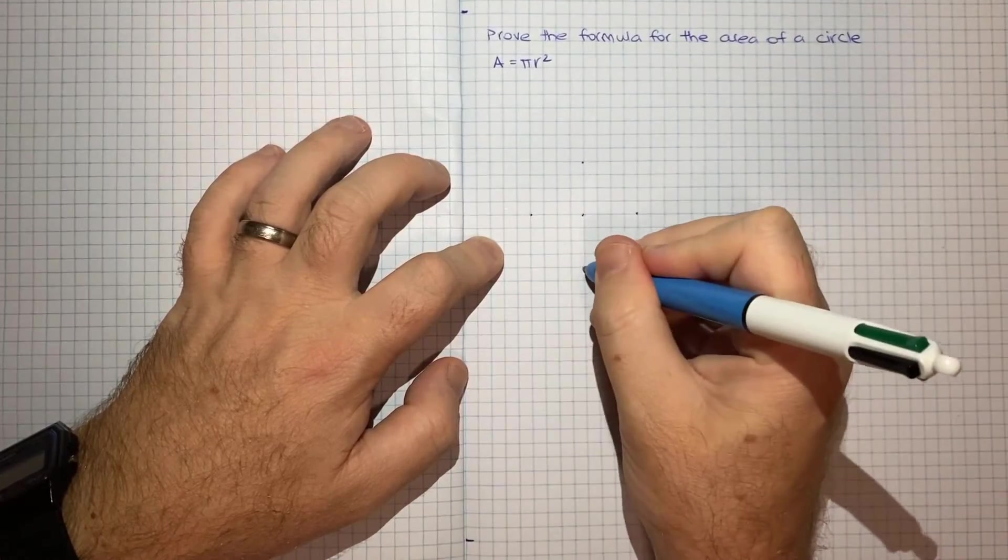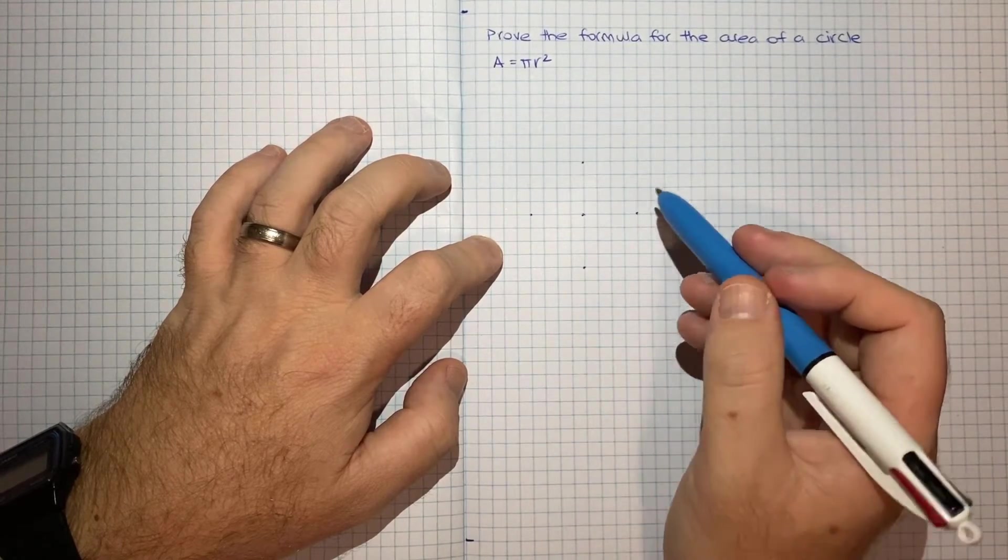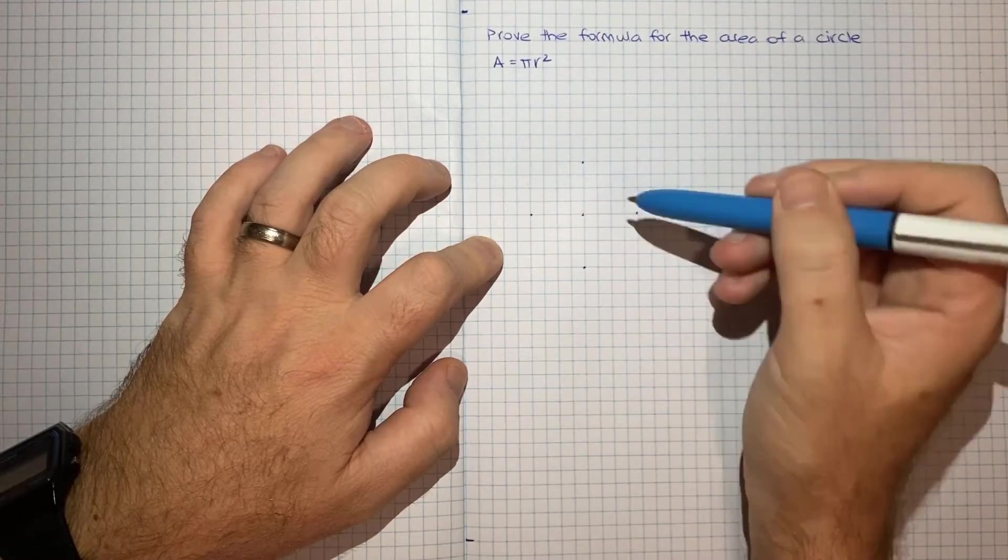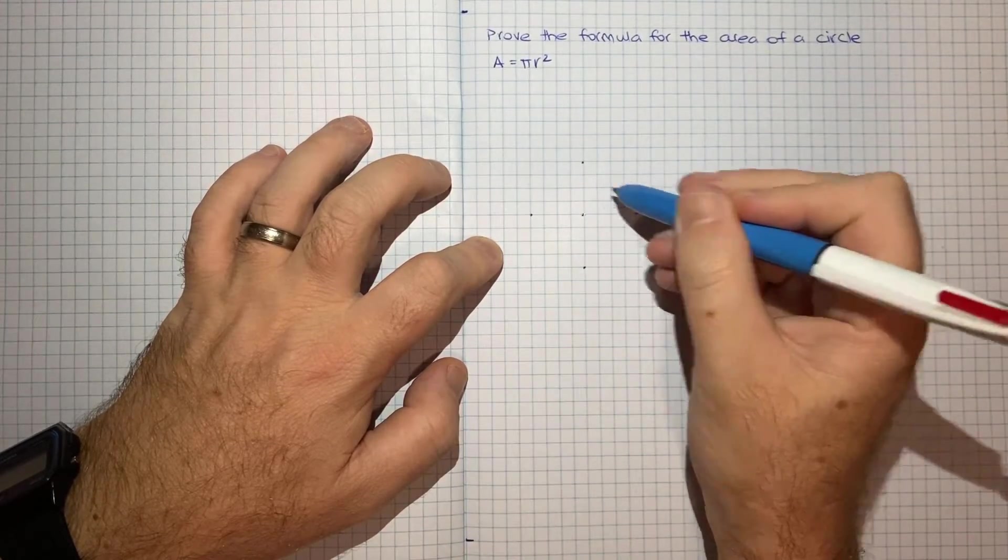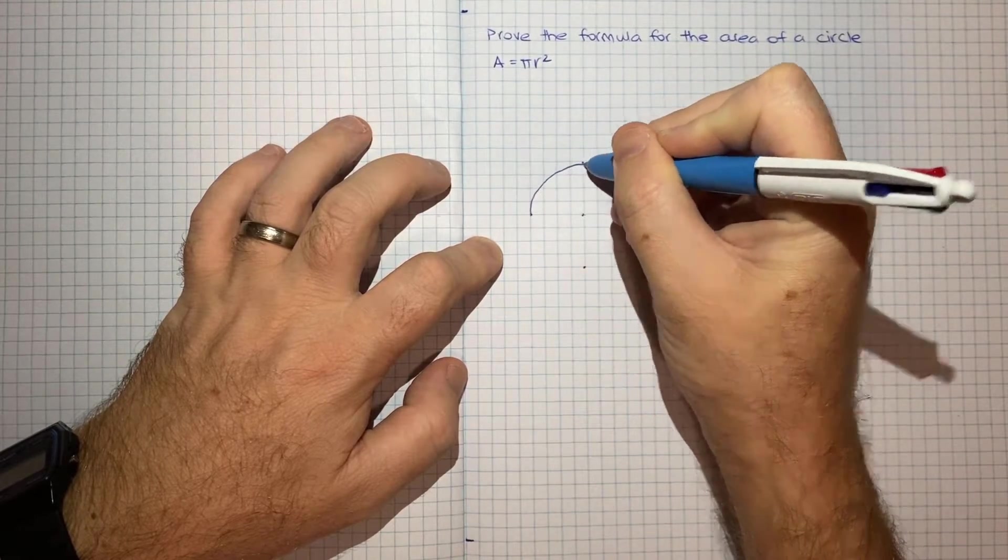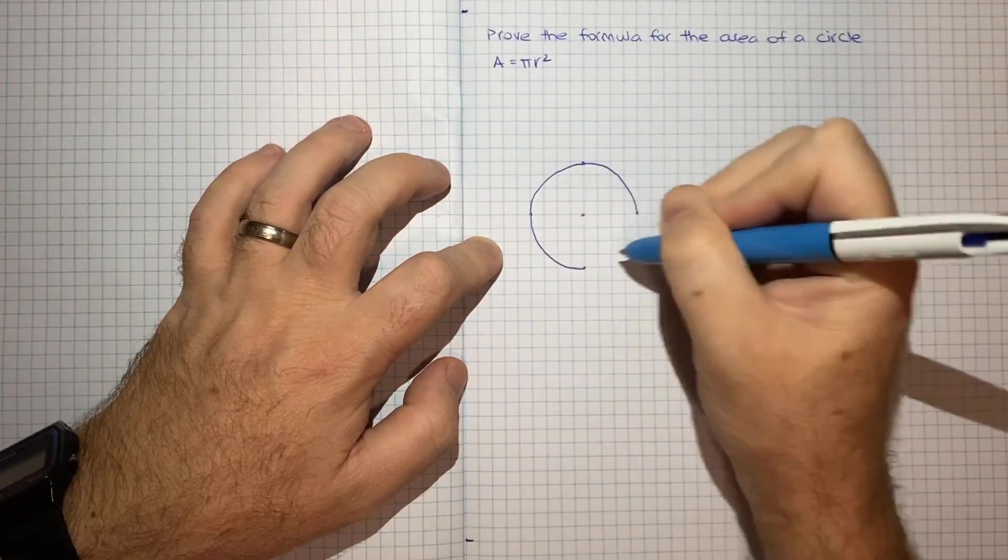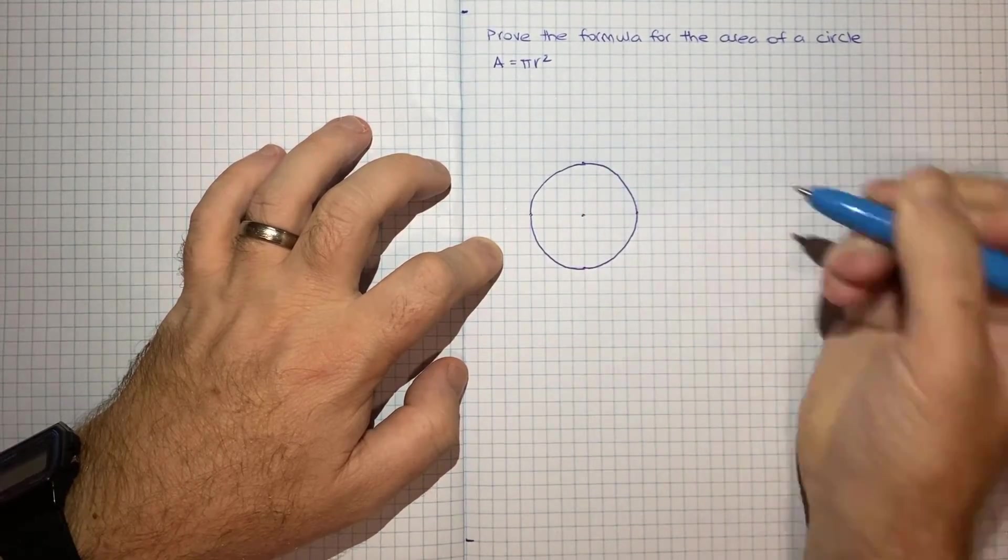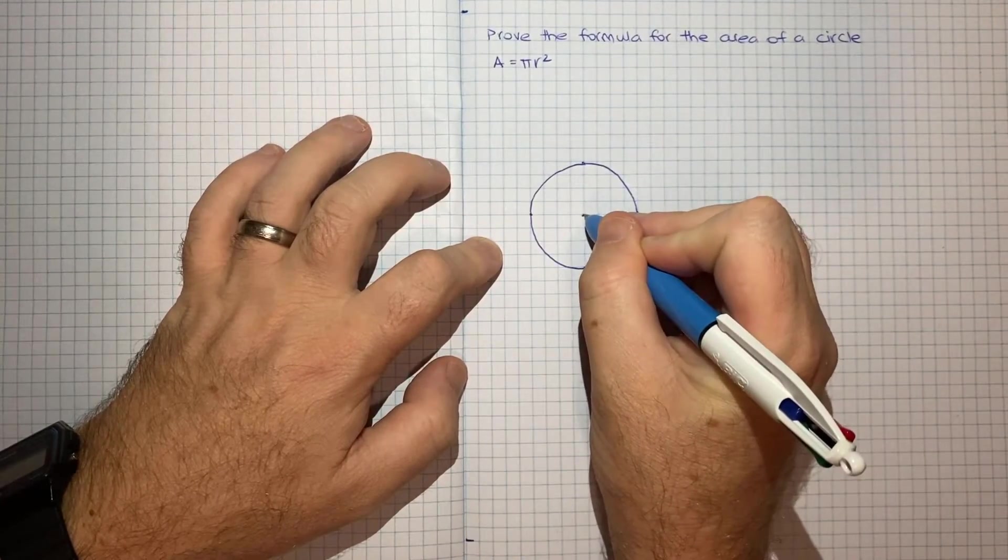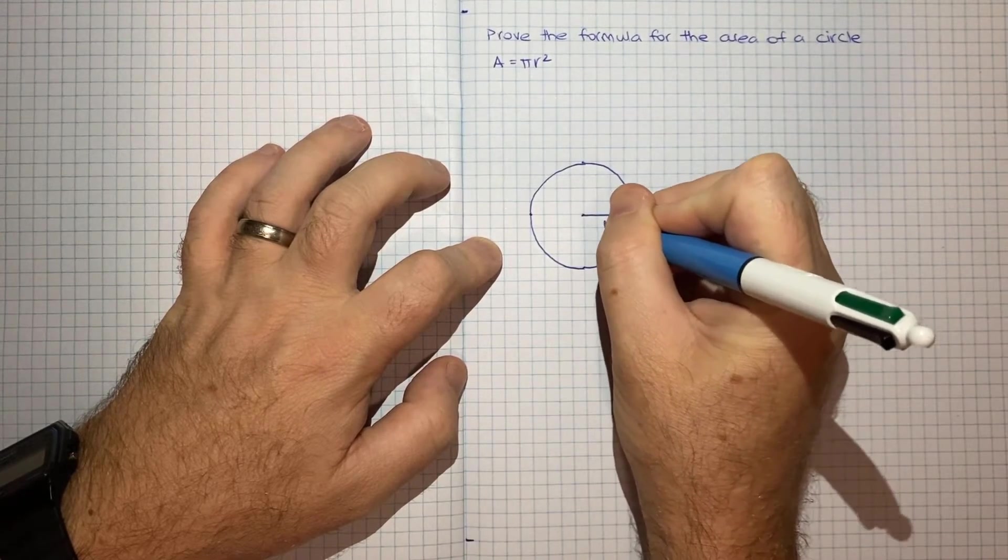So basically, we know that a circle is defined as kind of the locus of all points that are equidistant from some centre. So I've kind of just marked out some equidistant points, and then I'll just do my best to fill in the gap in a way that's not too far from what a circle is. So there's my circle. This is the centre, which means the distance from the centre to anywhere in the circle will be the same. It will be r for the radius.